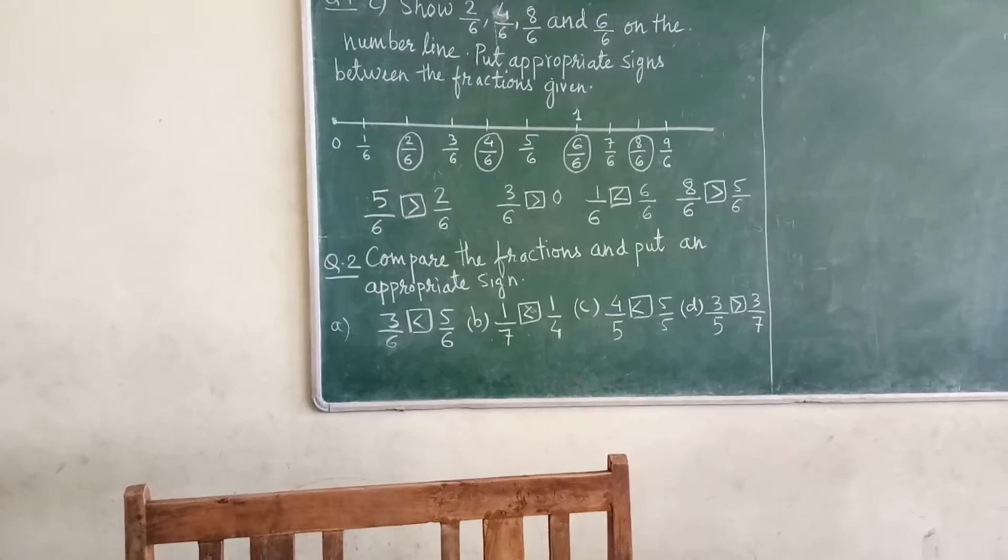What happens in this one? You have done the 7th part and in the second one you have done the 4th part. So the denominator which is greater, the fraction will be smaller. Like 1 upon 2 is greater than 1 upon 4. So same way, the denominator which is greater, the fraction will be smaller.